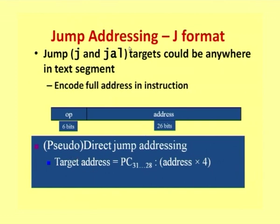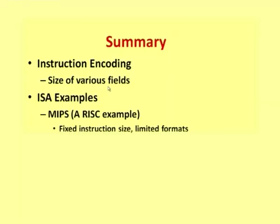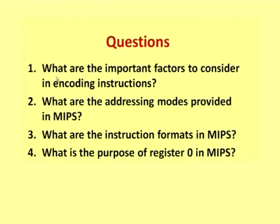To summarize, we looked at how the size of various fields is calculated for instruction encoding, and examined the MIPS architecture as an example of a RISC architecture — it uses fixed instruction sizes and limited formats (just three formats cover the complete set of instructions and addressing modes). Review questions: (1) What are the important factors to consider in encoding instructions? (2) What are the addressing modes provided in MIPS? (3) What are the structured instruction formats in MIPS? (4) What is the purpose of register zero in MIPS?